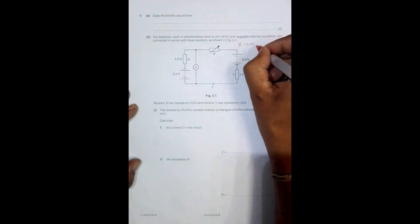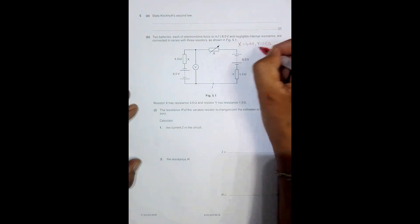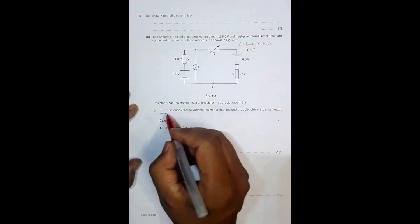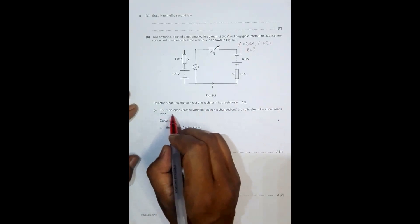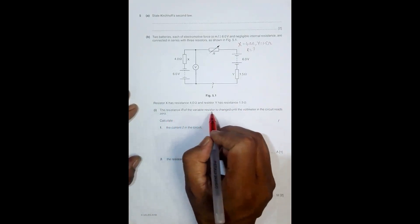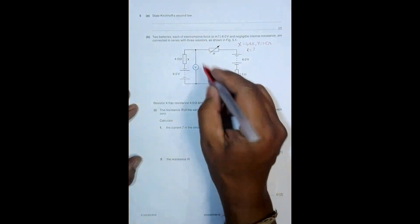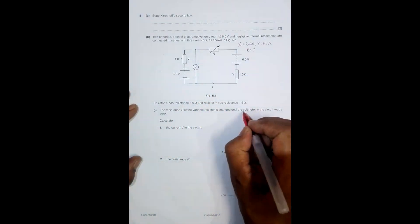The next one, Y, equals 1.5 ohm, and the other is a variable resistor R. The resistance of the variable resistor is changed until the voltmeter in the circuit reads zero. This is a special case - we vary the resistance so the voltmeter reads zero.